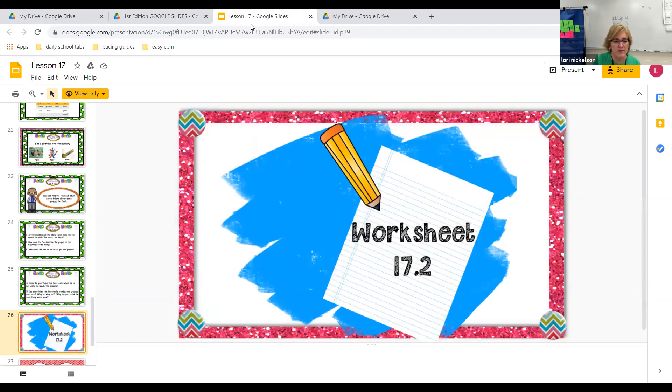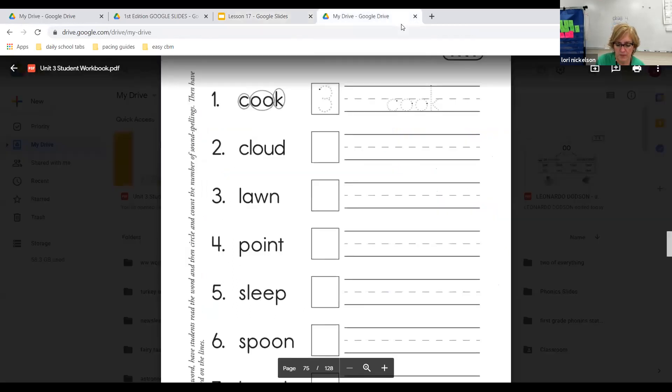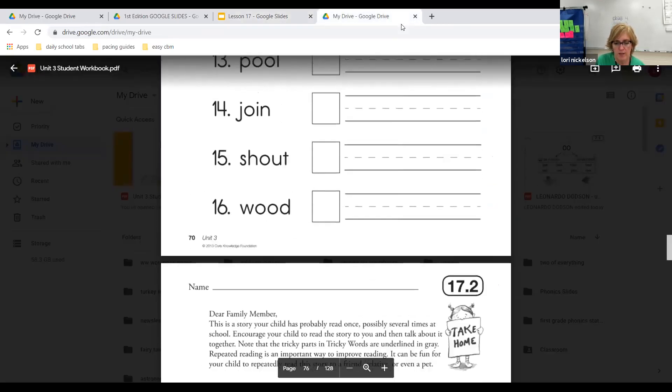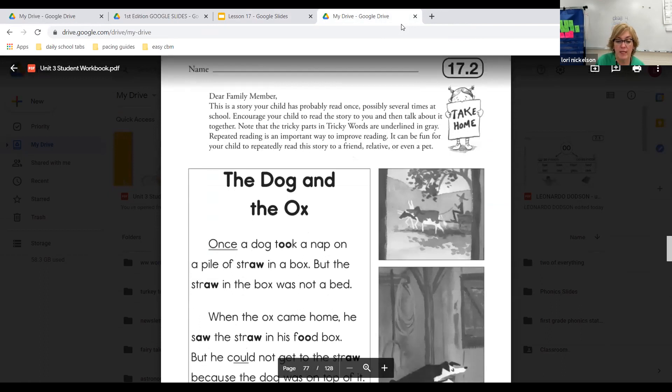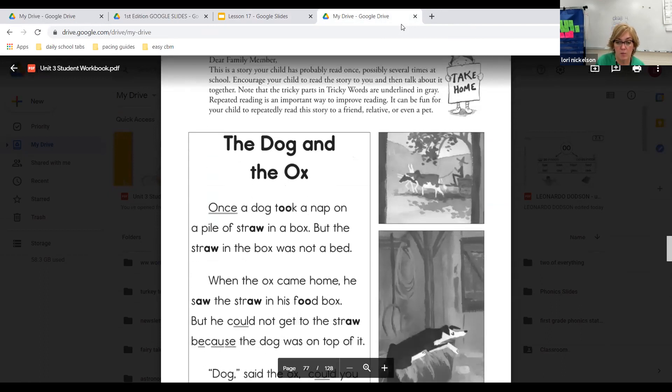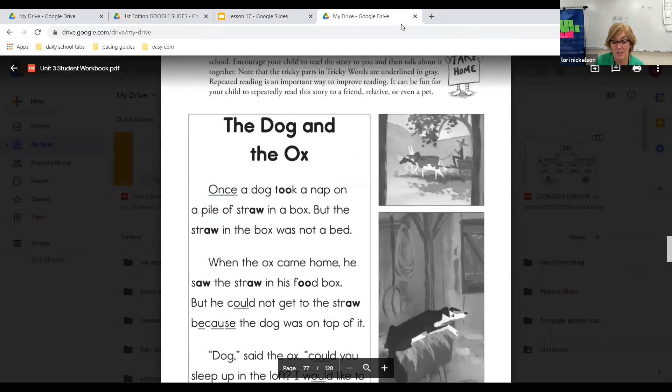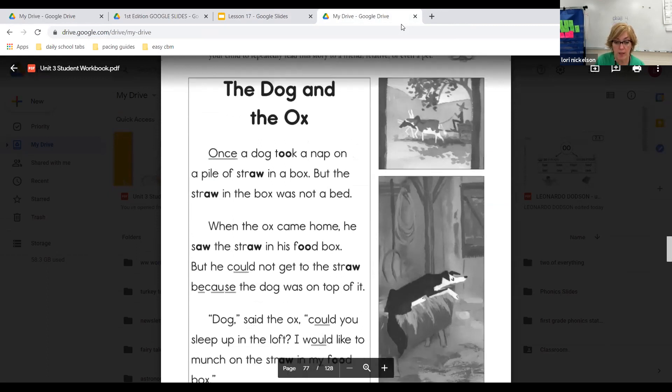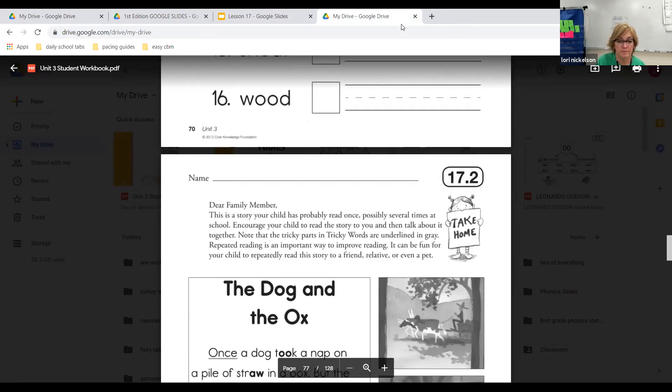So, 17.2. If we go to 17.2 over here, you have a reading of the dog and the ox where you can practice reading this story at home, okay? Let me get rid of this bar again. It just likes to show up.